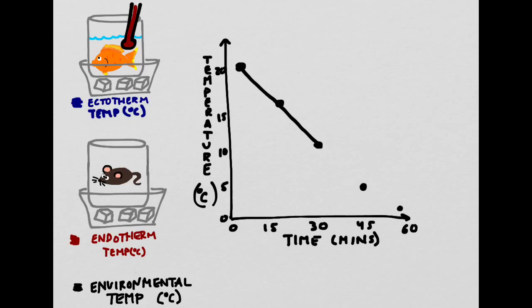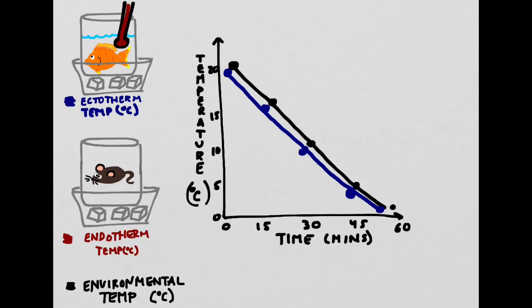Over time, it decreased and finally leveled out at about 3 degrees Celsius, just above freezing. The fish's temperature mirrored the environment almost exactly. The colder the environment got, the colder the fish got.